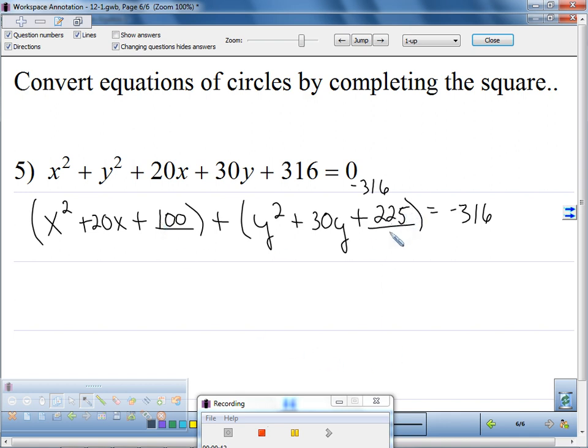So whatever we add here and here, we have to add over here. So we add 100 and we add 225, and so we end up with 9 when we combine all this.